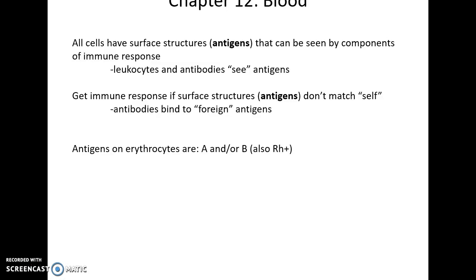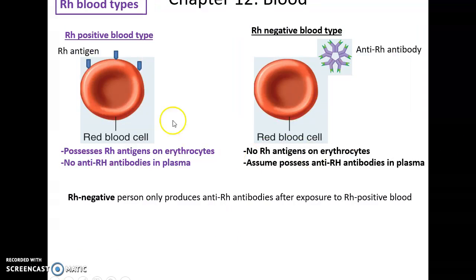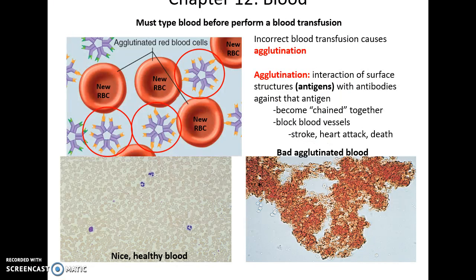Antigens are things found on the surface of our cells. Leukocytes and antibodies see these antigens and will bind to them if from a foreign cell. Antigens are also found on erythrocytes — the A and/or B antigens and the Rh antigen. Blood type A means you have A antigens and anti-B antibodies; type B means B antigens and anti-A antibodies; type AB has both A and B antigens and no antibodies; and type O has no antigens but antibodies against both types. Rh positive means you have the Rh antigen; Rh negative means you don't and you have antibodies against it. In a blood transfusion, you want matching or compatible blood types, because mismatched antigens trigger antibodies to bind to the new blood cells, leading to massive clotting that can block vessels, causing stroke, heart attack, and death.